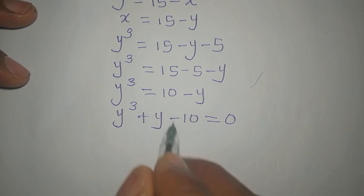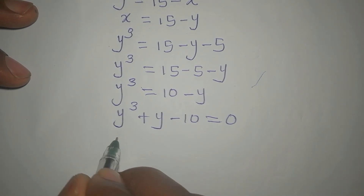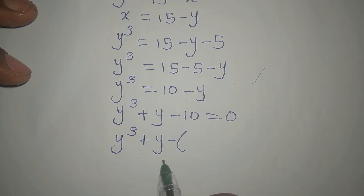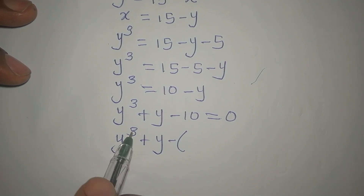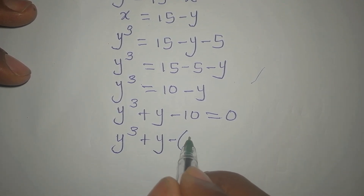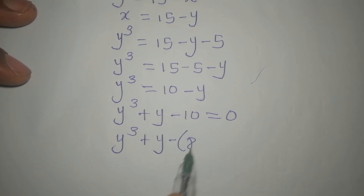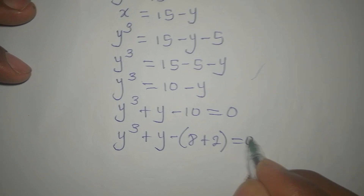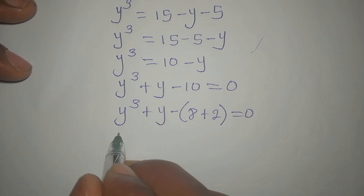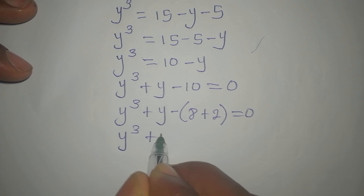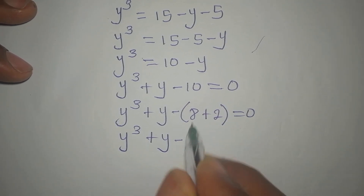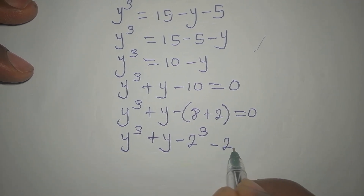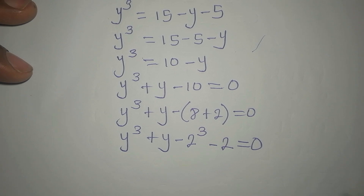We have Y³ plus Y minus 10. I can write 10 as 8 plus 2, since 8 is 2 cubed. So we get Y³ plus Y minus 8 minus 2, which is Y³ minus 2³ plus Y minus 2, all equal to zero.